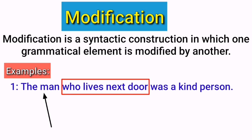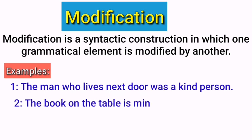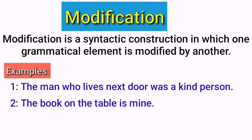That was an example of a clause as a modifier. Now, an example of a phrase as a modifier: 'The book on the table is mine.' Here, 'on the table' is a prepositional phrase but it functions as a modifier — it modifies the noun phrase 'the book.' It gives us information about, or specifies, the book. If I ask which book is mine, the answer is: the book on the table. So a phrase can also be part of modification in linguistics.